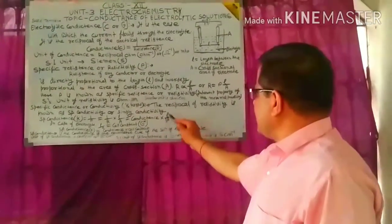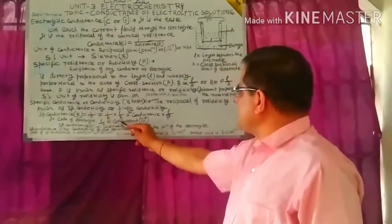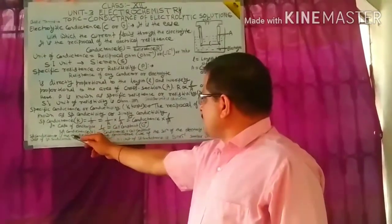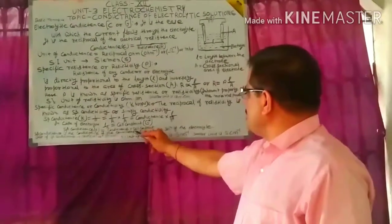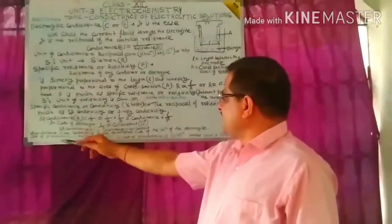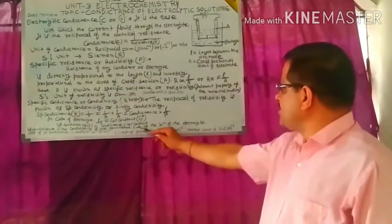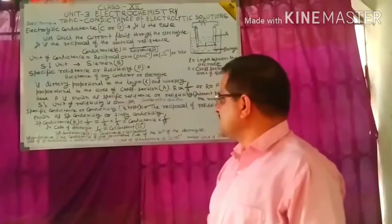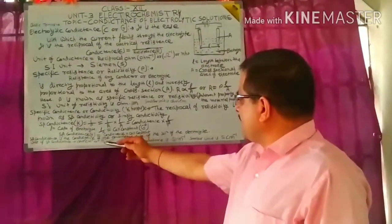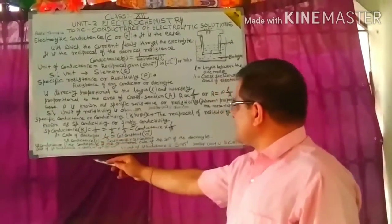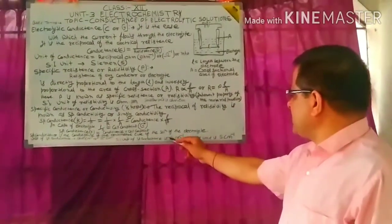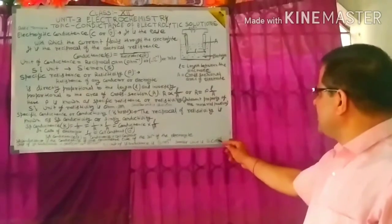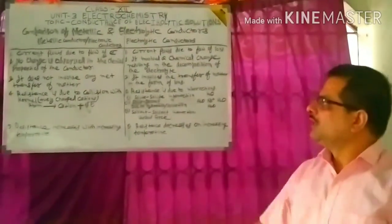In the case of an electrolyte, L/A is equal to the cell constant, represented by G*. Thus, specific conductance κ = conductance × cell constant. Specific conductance is the conductance of one cubic centimeter of the electrolytic solution. The unit of specific conductance is ohm⁻¹ cm⁻¹. The SI unit is Siemen per meter; a smaller unit is Siemen per centimeter.